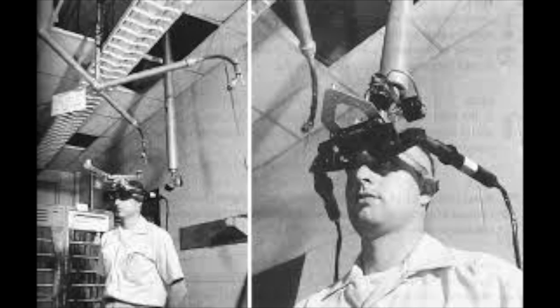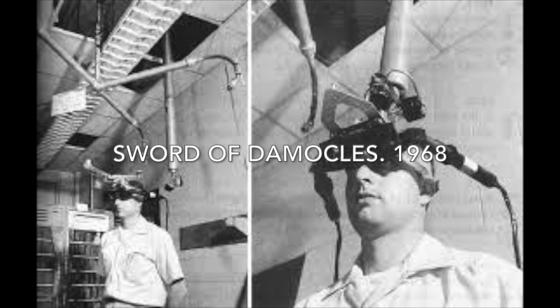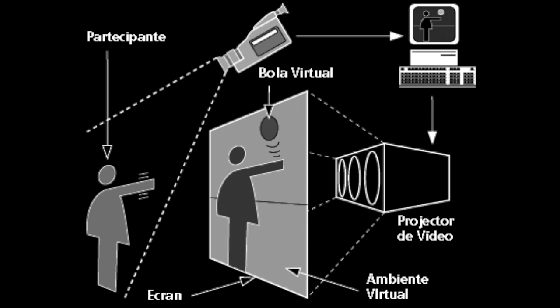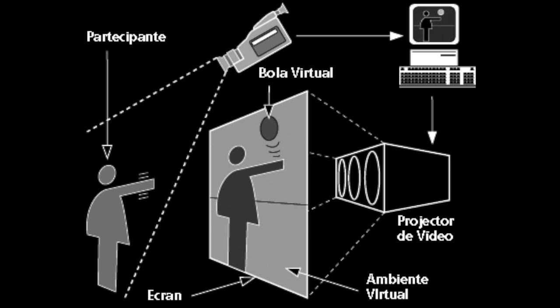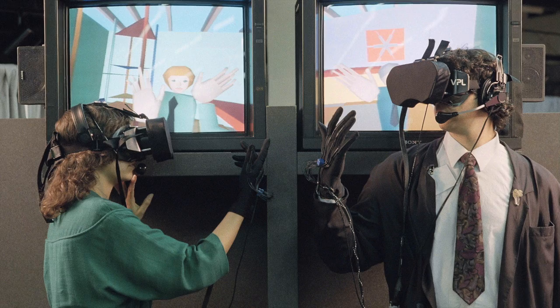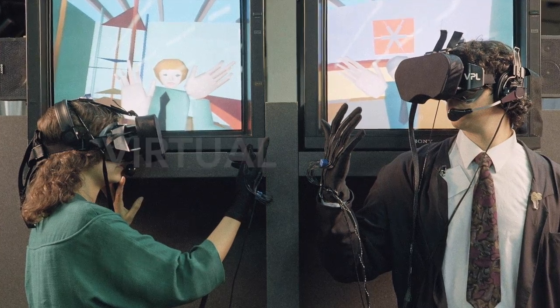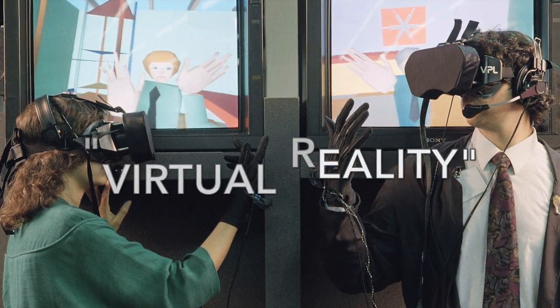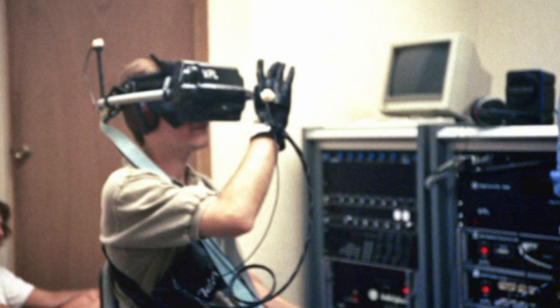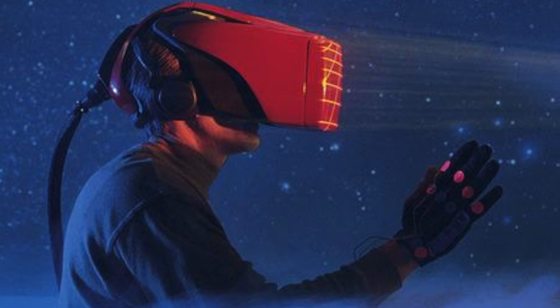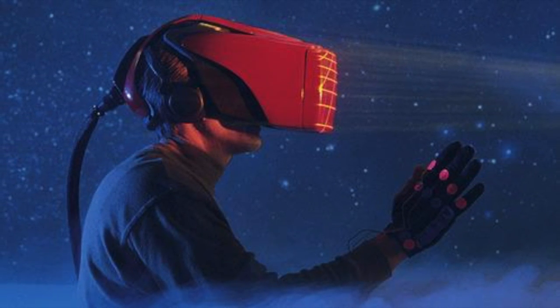This then transitioned to the first ever VR head-mounted display in the 1960s — the Sword of Damocles — and then artificial reality, where such technology enabled people to communicate with each other in a responsive computer-generated environment despite being miles apart. This history all leads to 1987, where the name 'virtual reality' was born. Jaron Lanier, founder of the Visual Programming Lab, coined the term and through VPL Research developed a range of VR gear, being the first company to sell virtual reality goggles.